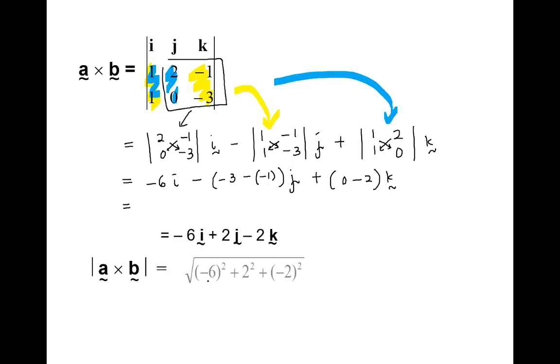Then we find the magnitude for that vector A cross B, which equals √44. So the vector perpendicular to both A and B is called vector N, the normal vector.